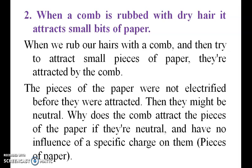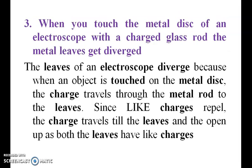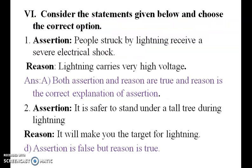When you touch the metal disc of an electroscope with a charged glass rod, the metal leaves get diverged. This is the reason why it is diverged.